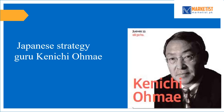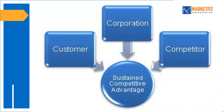Mr. Ohmae, in this model, says that it lists the three significant key factors which provide a sustained competitive advantage for the success of any business. The first C is Customer, another C is Corporation, and the other C is Competitor.